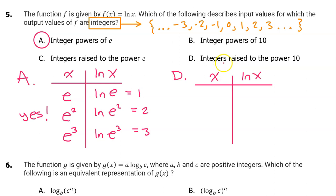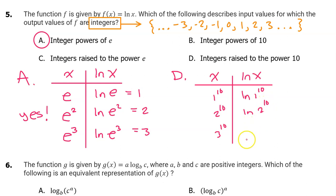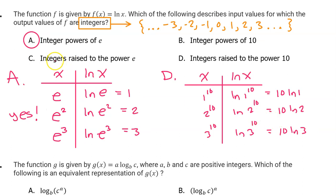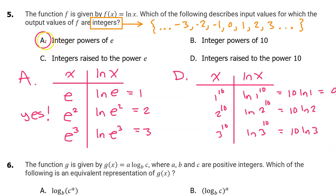Option D says integers raised to the power of 10 — like 1 to the 10th, 2 to the 10th, 3 to the 10th. This gives natural log of 1 to the 10, natural log of 2 to the 10, natural log of 3 to the 10th. This is essentially the same result as option C: the first gives 10 times natural log of 1, which is 0 — an integer — but natural log of 2 and natural log of 3 are decimals, and 10 times a decimal is still a decimal. So our first answer was correct: A is the answer.